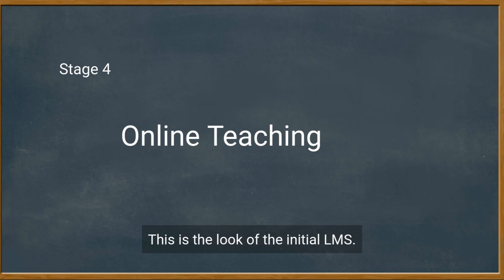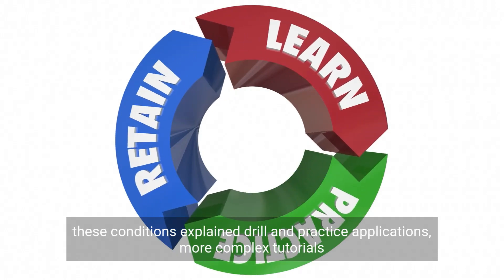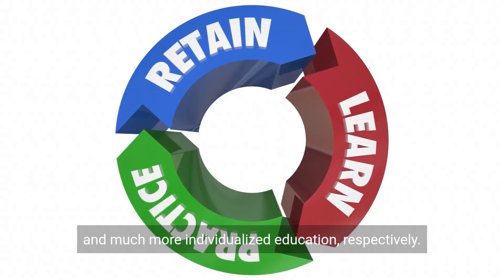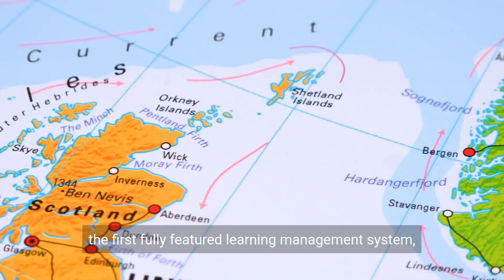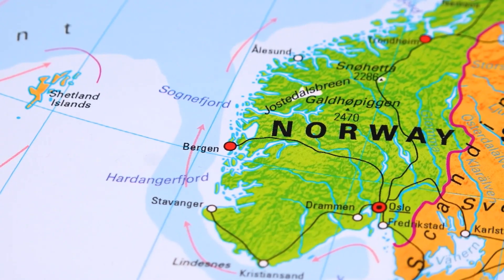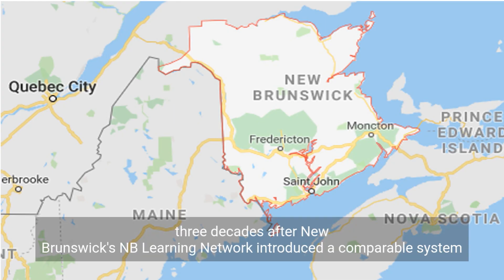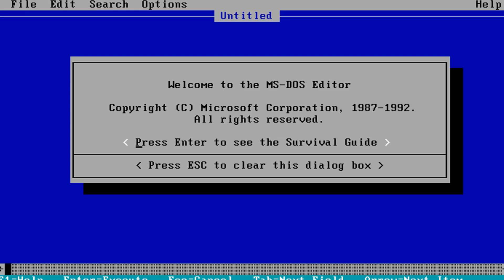Stage 4: Online Teaching. This is the emergence of the initial LMS. These conditions explain drill and practice applications, more complex tutorials, and much more individualized education. The first fully-featured Learning Management System was called EKKO, developed and released by Norway's NKI Distance Education Network in 1991. Three decades after, New Brunswick's NB Learning Network introduced a comparable system, intended for DOS-based instruction and committed exclusively to company learners.